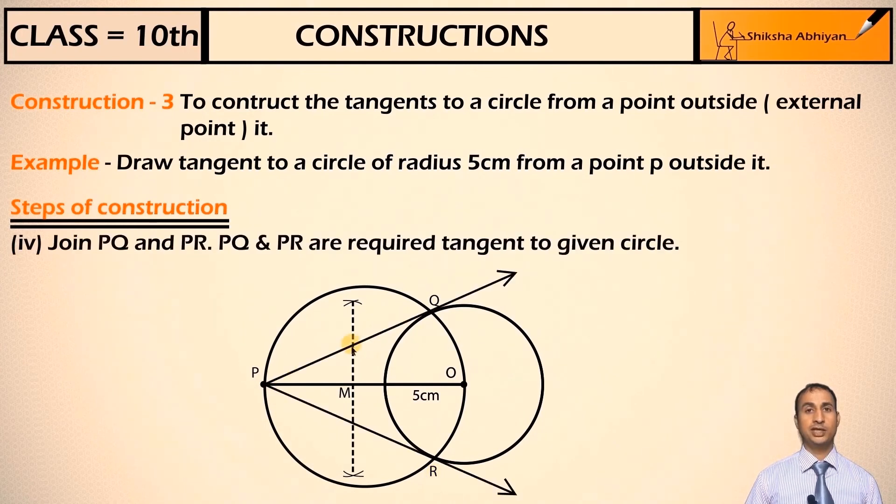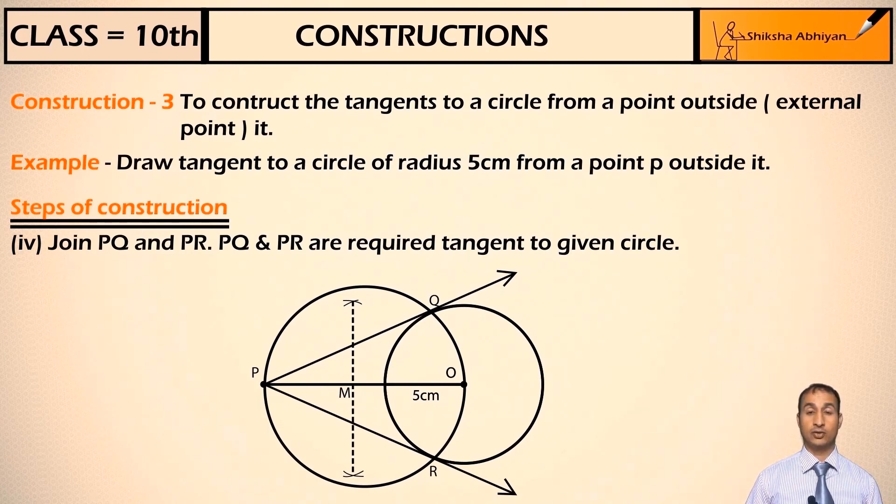Now join PQ and PR. So PQ and PR are the required tangents to the given circle. This is a pair of tangents. This is our required tangent. This is the construction students, very simple and you will understand well.